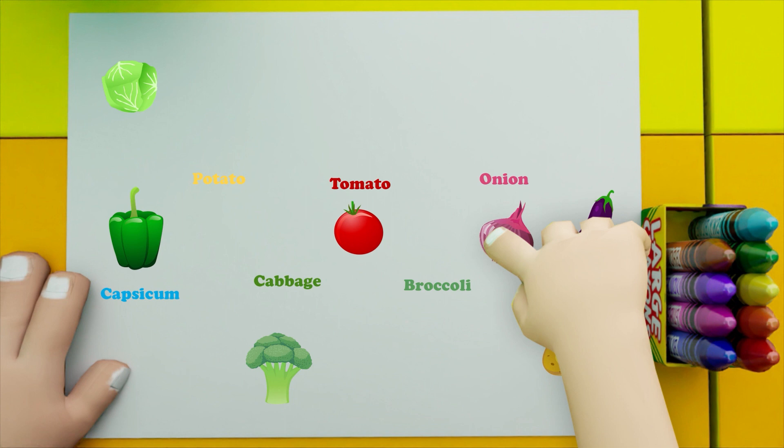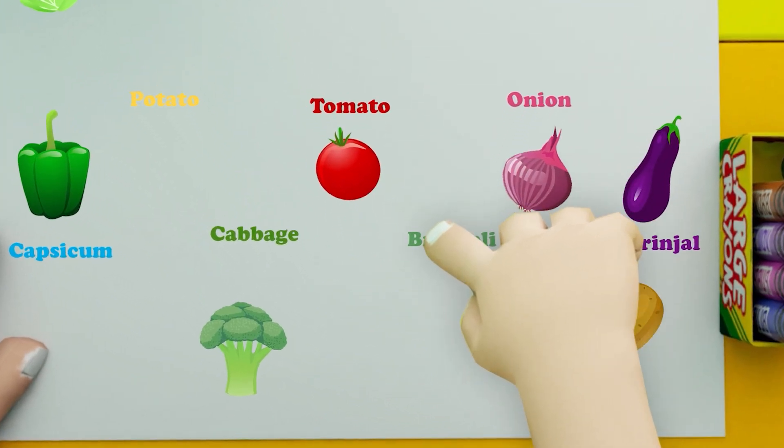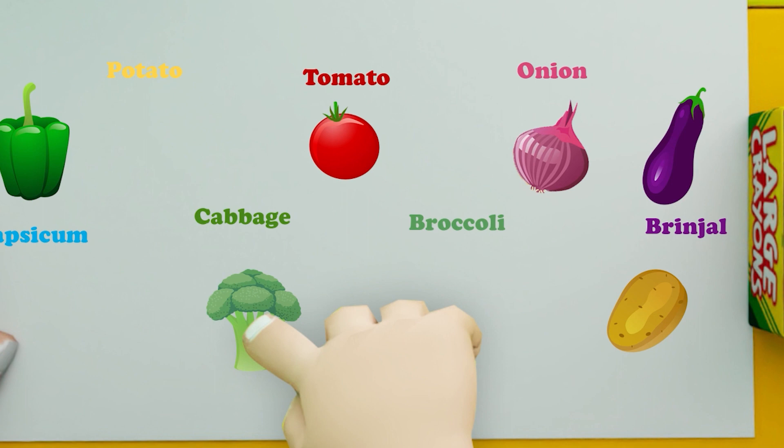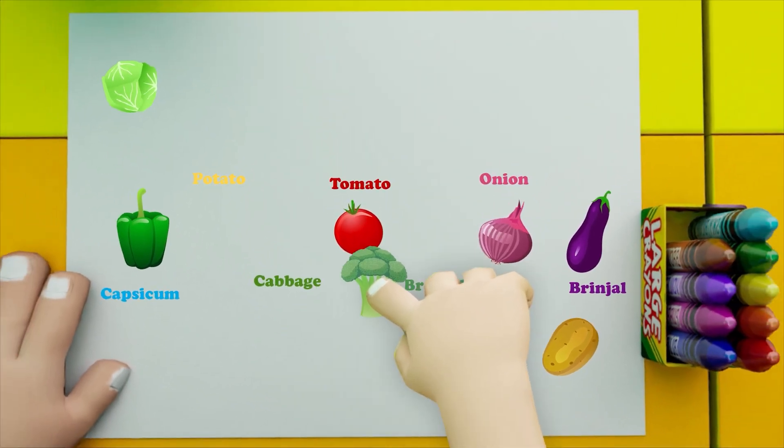Now it is green, so it is broccoli. This is also green, but it is broccoli. So broccoli is put here. Look, there is broccoli and onion. There is broccoli.